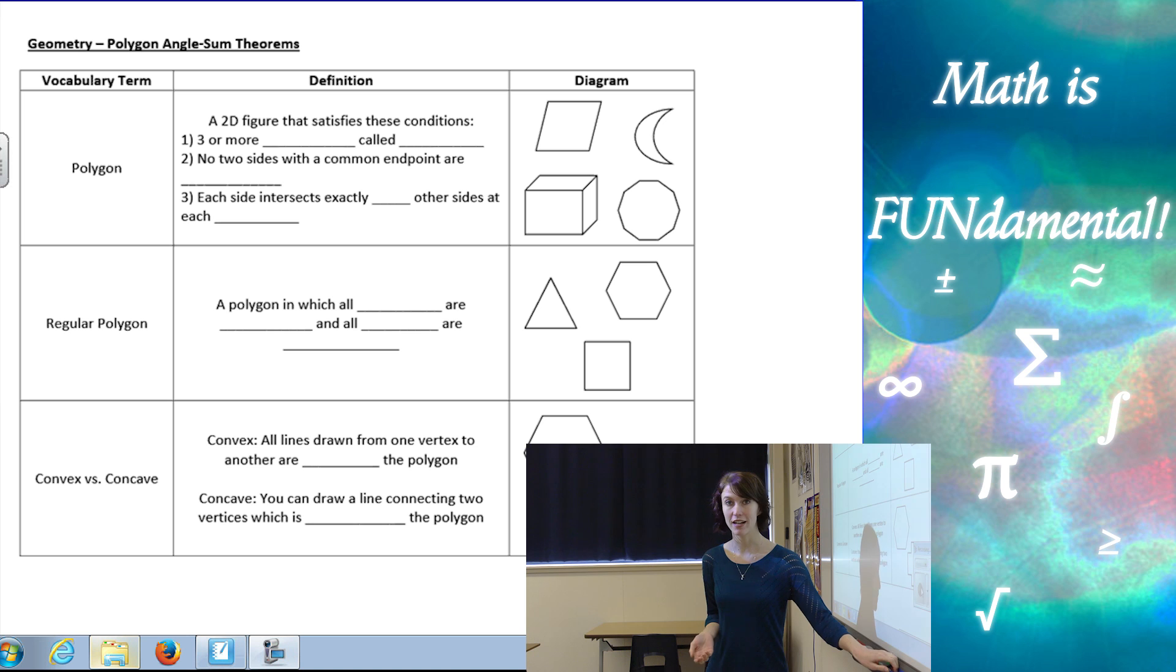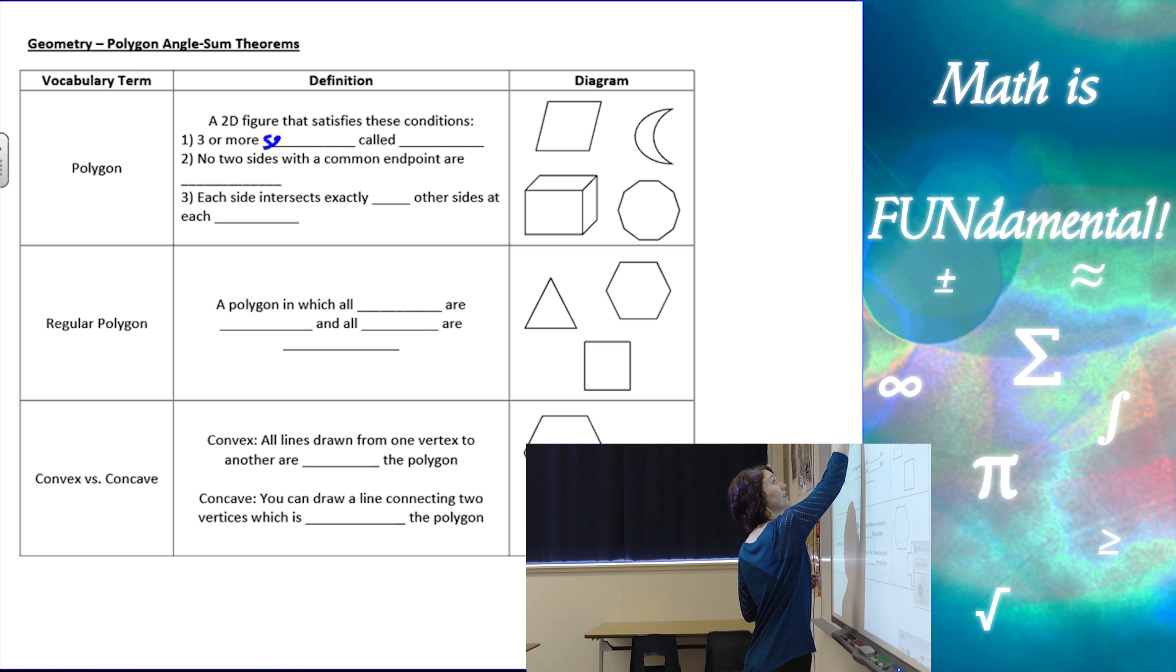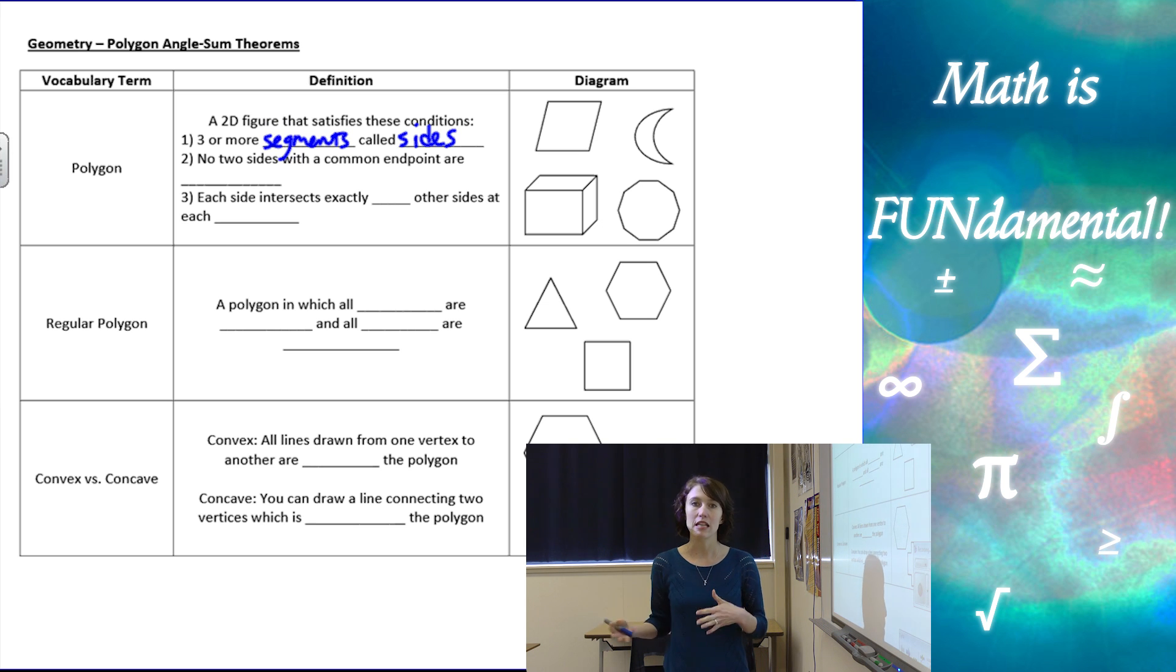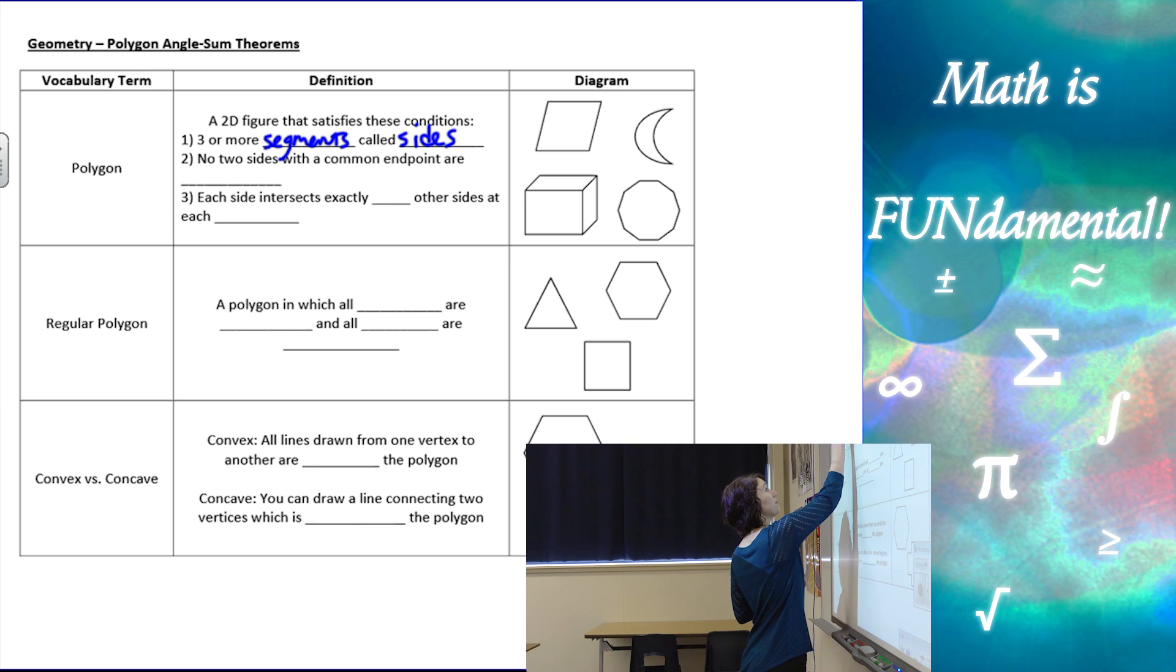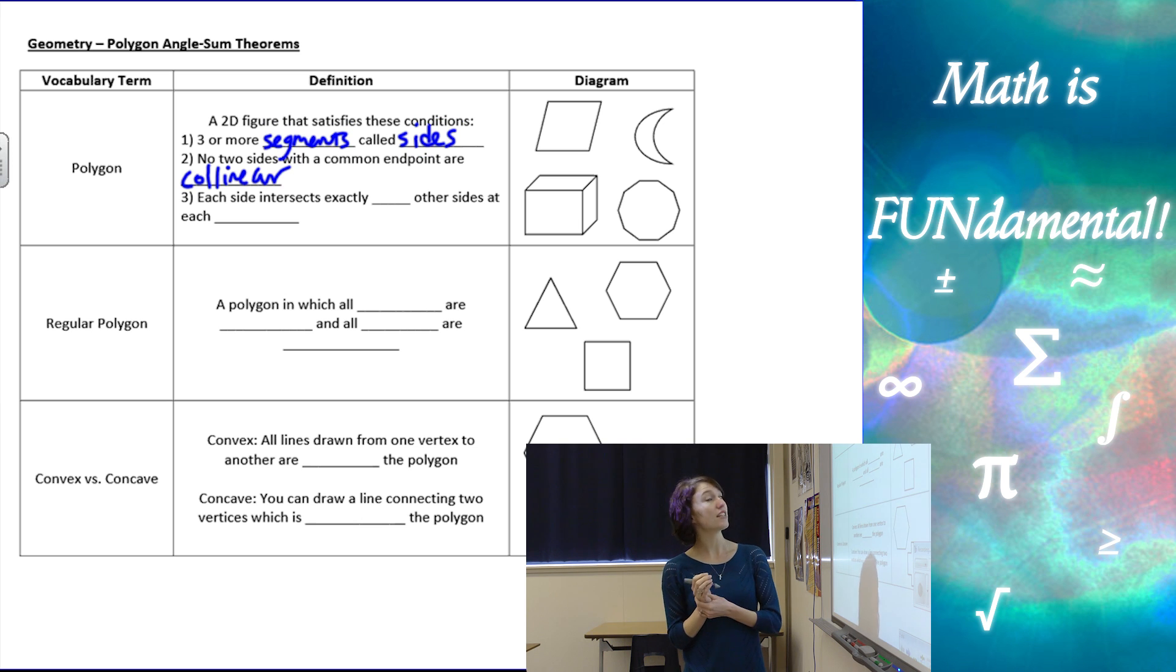We're going to start first by defining what a polygon is. A polygon is a two-dimensional figure that satisfies three conditions. The first one is three or more segments called sides. No two sides of a common endpoint are going to be collinear, and each side intersects exactly two other sides at each vertex.